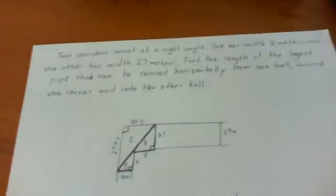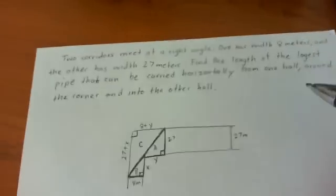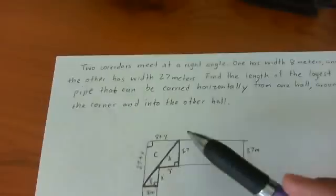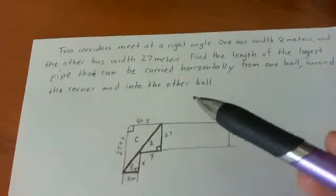Okay, so first what I did was I set up a small diagram just to make things easy for me. So here's the corridor and this line right here is the pipe. So what's going to be happening is this is 27 and this is 8.